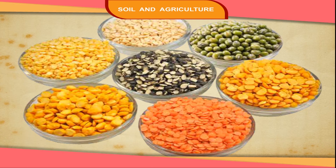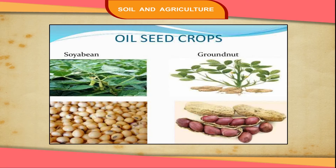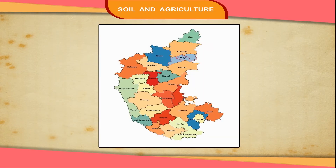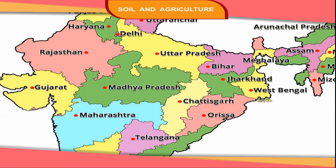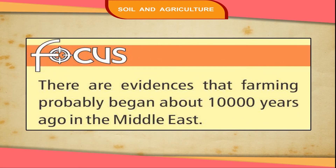Pulses and oilseeds: Pulses like peas, beans, arhar, urad, etc. are grown in every part of India. Oilseeds like mustard, sesame, linseed, castor, groundnut and coconut are grown in Tamil Nadu, Maharashtra, Uttar Pradesh and Gujarat. There is evidence that farming probably began about 10,000 years ago in the Middle East.